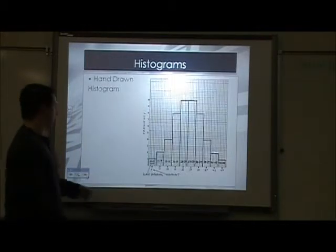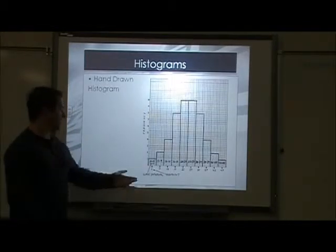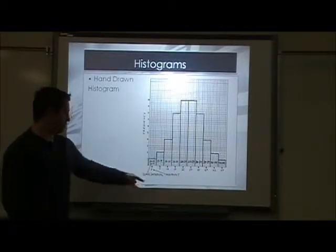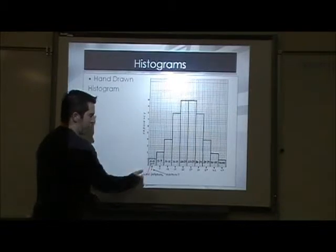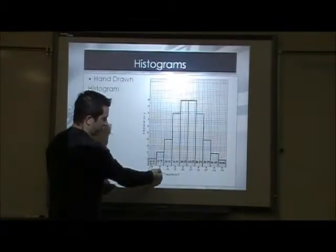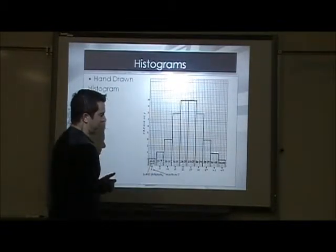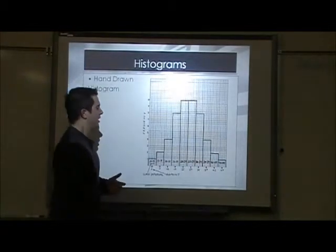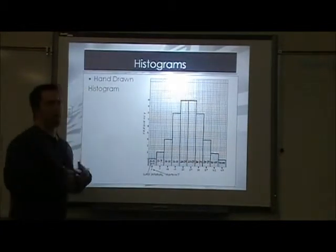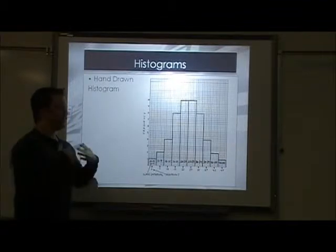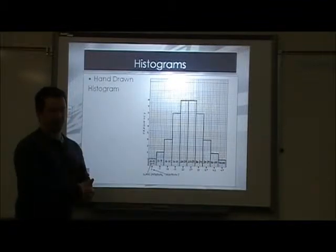If you look on the next slide, your midpoint is halfway in between your class interval of 0 to 4. Then you've got 5 to 9 — halfway in between there is 7. Then 10 to 14, the midpoint is 12, and so on. Knowing that middle point is going to be very important when you're labeling these data sets.